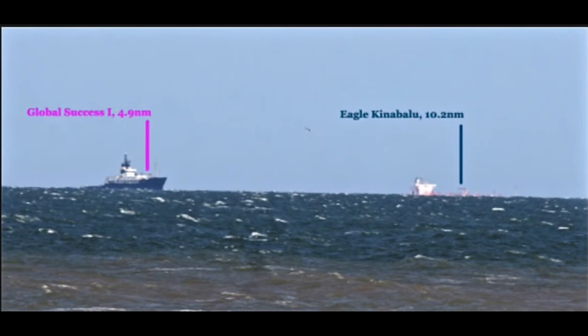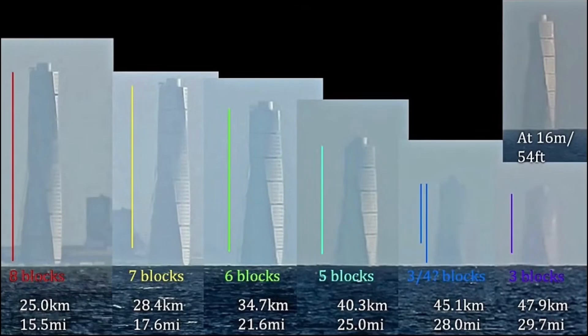This is the first image right after the title screen. The Eagle Kina Baloo is partly hidden behind the horizon, and no amount of zoom is gonna bring that back. This second image in the video shows us a building at different distances — the further away, the more of the bottom is hidden behind the horizon. This is not looking so good for Flat Earth at all.